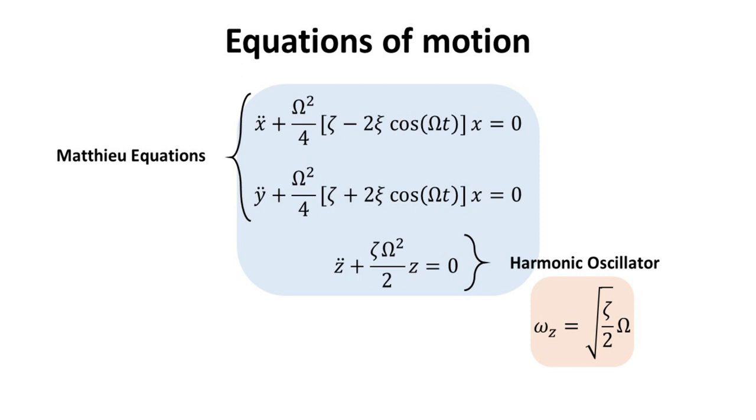Therefore, the motion in the X and Y direction follow the Mathieu closed orbits as we had shown before, while in the Z direction, we have harmonic oscillation, successfully trapping the ion in between the four rods and the caps.